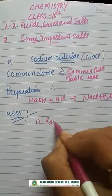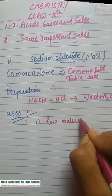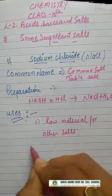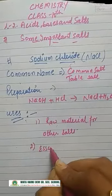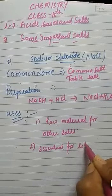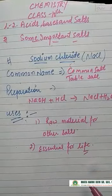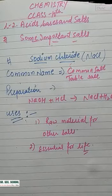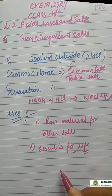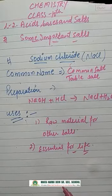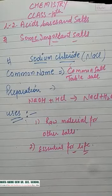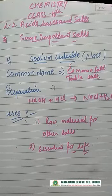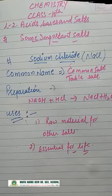What are the uses of NaCl? It is used as a raw material for the preparation of other salts. Second, it is essential for life — for muscle contraction and conduction of nerve impulses in the nervous system. Additionally, sodium chloride is converted into hydrochloric acid, which helps in the digestion of food in the stomach.